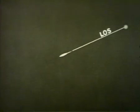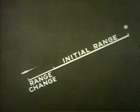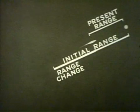An elementary example of range keeping is one with a stationary target and with own ship moving at constant speed along the line of sight. The problem starts with an observed initial range. At any moment, the sum of range change and initial range is present range.